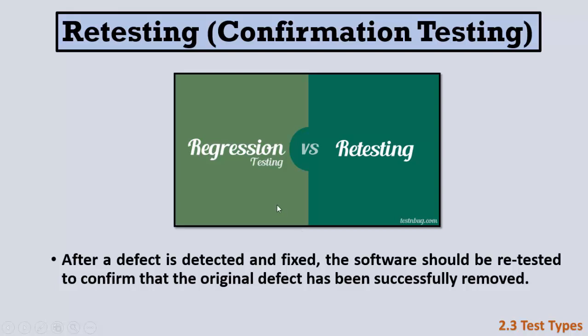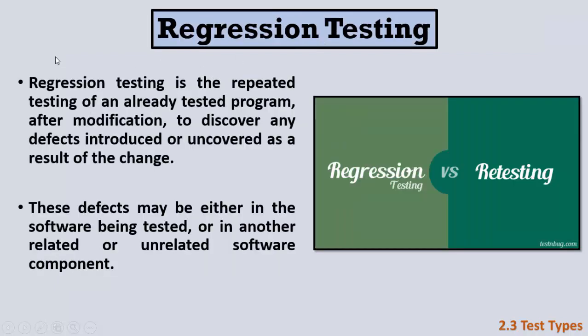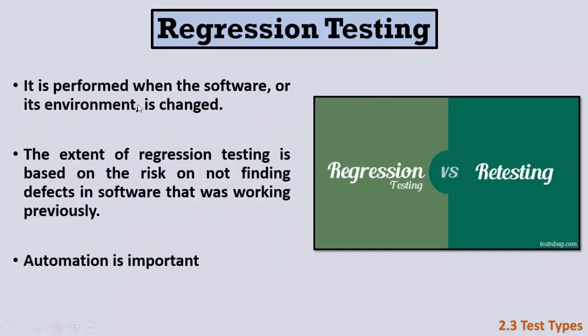Regression testing means testing a part of the system that was tested before and had no bugs, because another part has changed and may affect it. For example, if changes are made to a website's register process, retesting covers the register process, but regression testing also covers the login function and edit profile function — because those functions are affected by the changed register function.